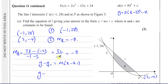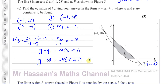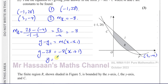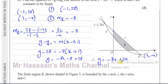Using the formula y minus y₁ = m(x minus x₁), with point (minus 1, 28) and gradient minus 8: y minus 28 = minus 8 times (x minus minus 1), which is x plus 1. Expanding: y = minus 8x minus 8 plus 28, so y = minus 8x + 20. That's the equation of line L. Part c is done.